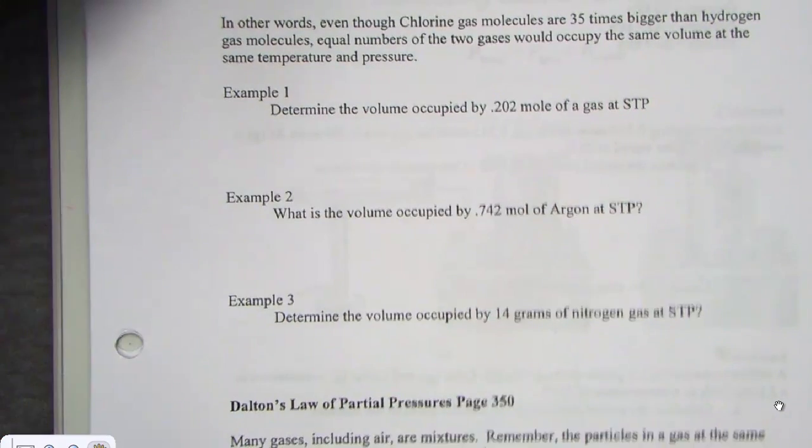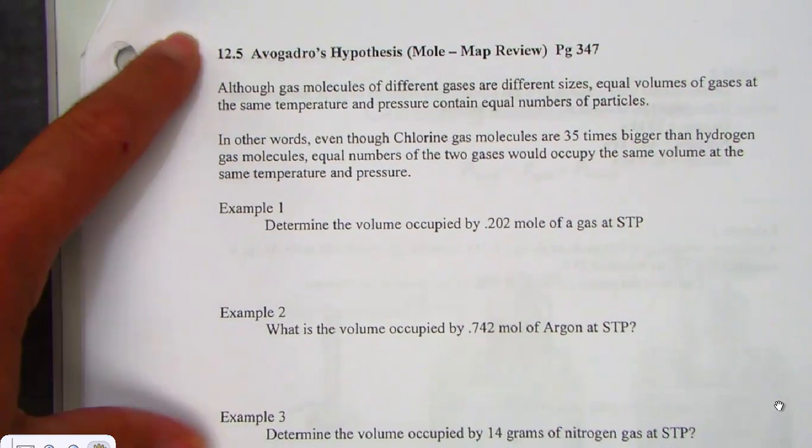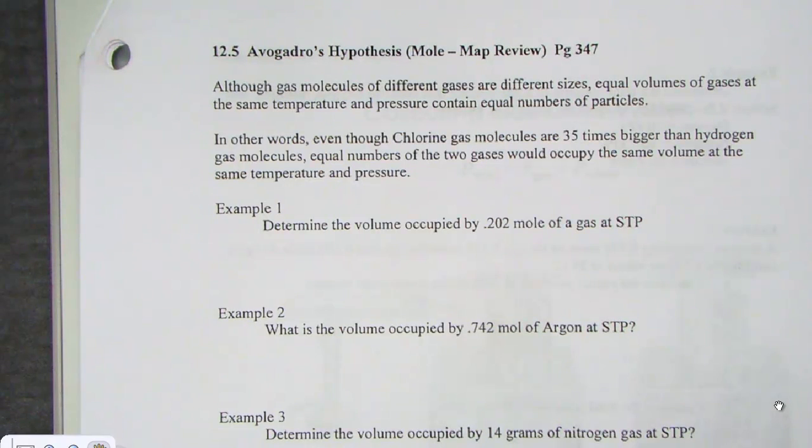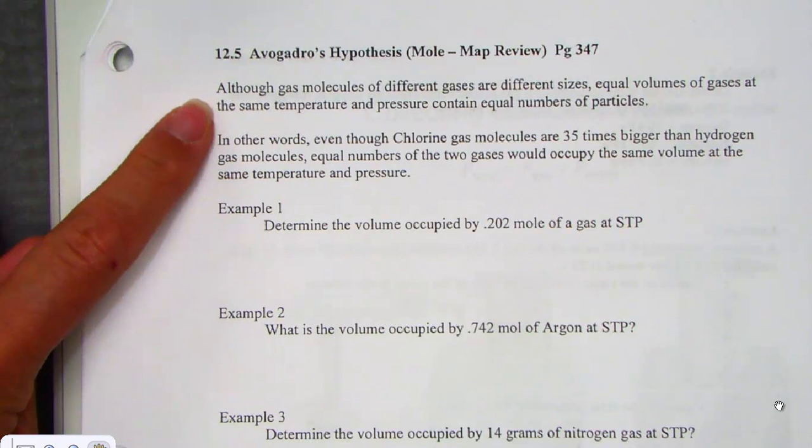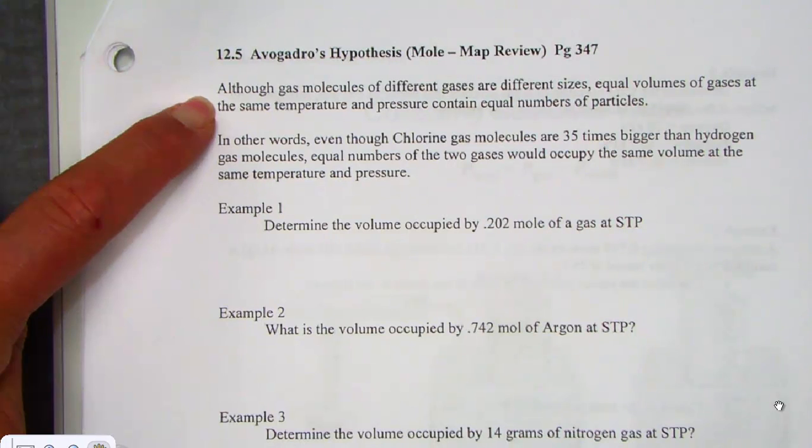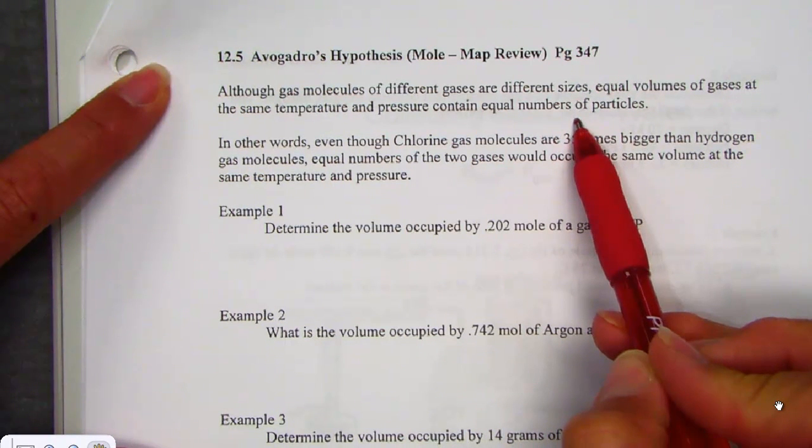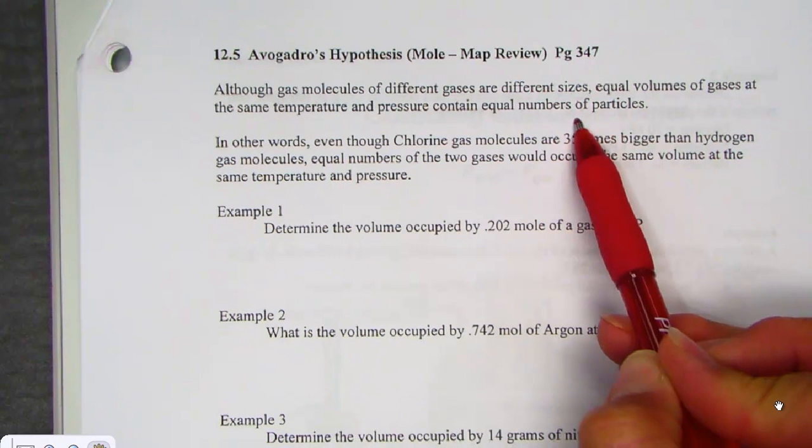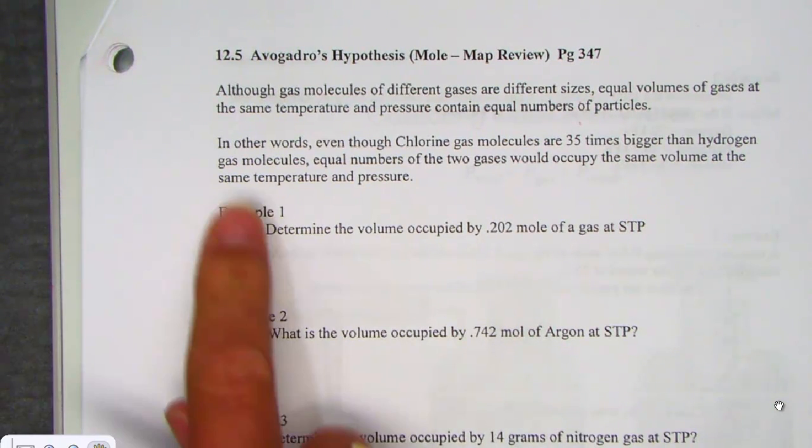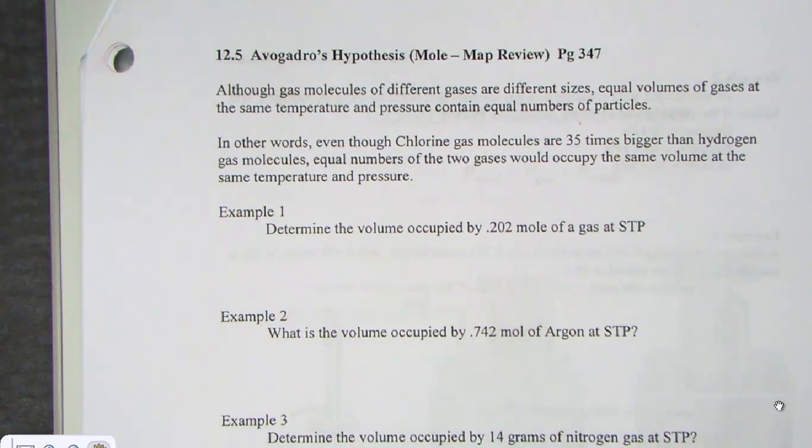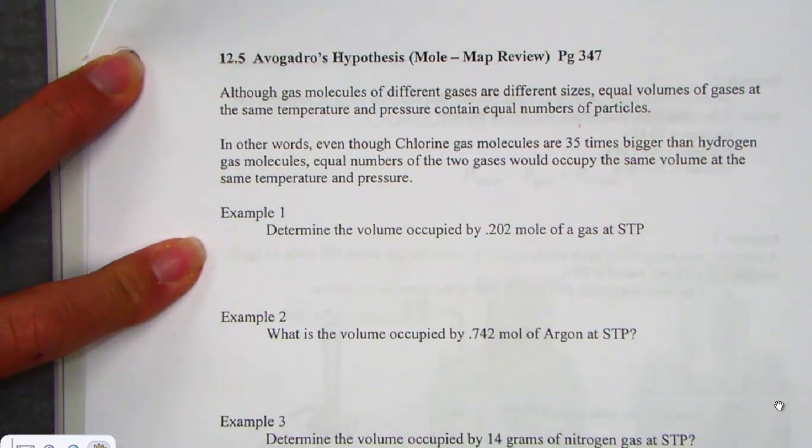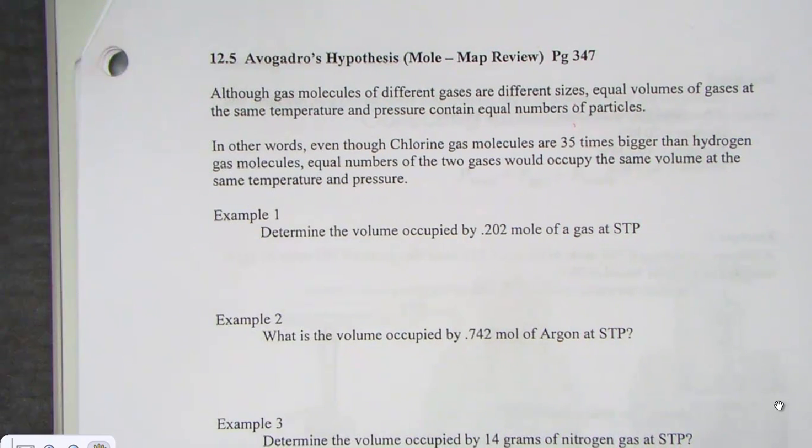We did a few practice problems right in our note pack, and I sent you on to try some additional practice right on your homework paper. But I wouldn't mind just picking up at the top of page 8, a little mole map review with a PV=nRT twist. Jake, on the top of page 8, I'm just seeing a title here, Avogadro's Hypothesis, a Mole Map Review. Would you just simply be a reader for us for that first sentence, allowing me to kind of review some mole map stuff? Although gas molecules of different gases are different sizes, equal volumes of gases at the same temperature and pressure contain equal numbers of particles. Thank you. You're allowing us to remember that the identity of the gas doesn't matter, that any gas will occupy 22.4 liters at standard conditions. Thank you, sir. Dean, would you kindly pick up in that next little sentence there? In other words, even though Chlorine gas molecules are 35 times bigger than hydrogen gas molecules, equal numbers of the two gases would occupy the same volume at the same temperature and pressure. Awesome. Thanks. Easy Mole Map Review.